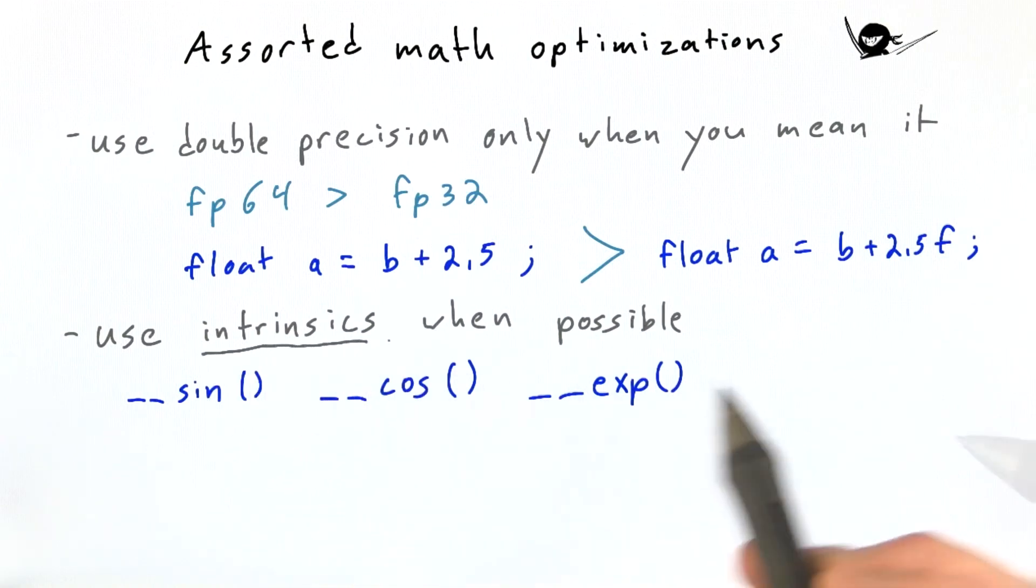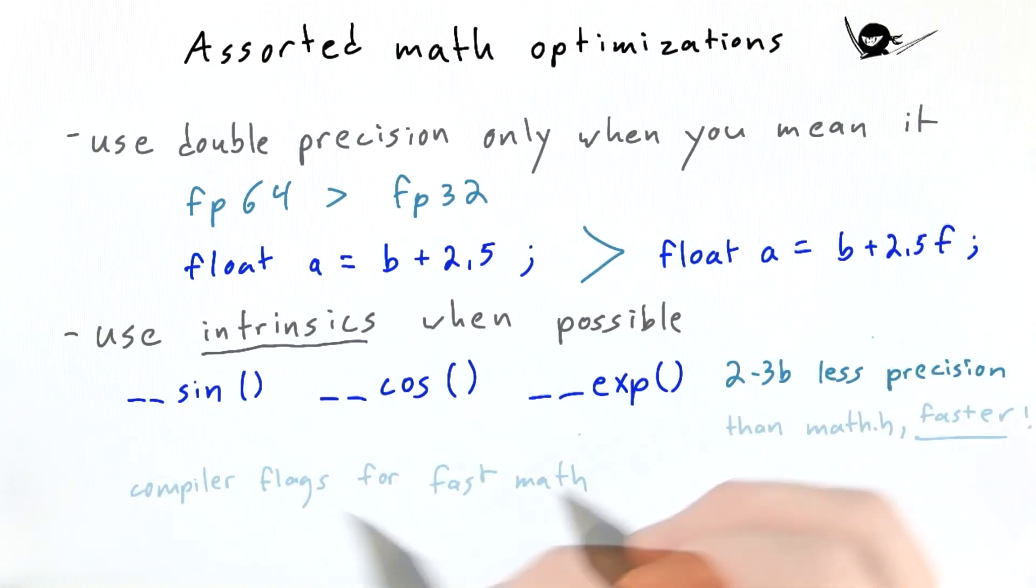These built-in functions achieve two to three bits less precision than their counterparts in math.h, but they are much faster. There are also compiler flags for fast square root, fast division, zero d norms, and so forth, and you can see the programming guide for more detail.